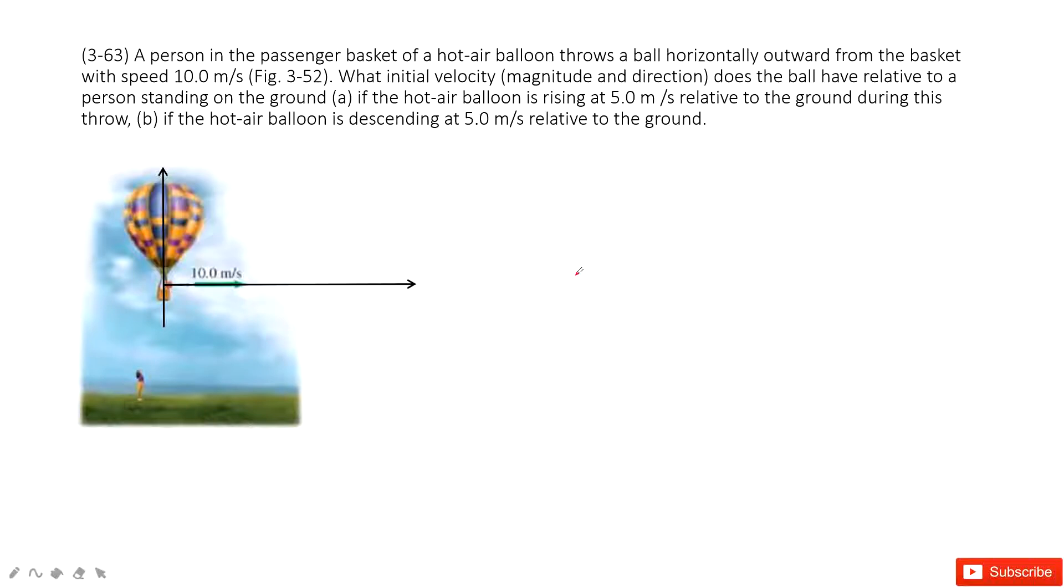In this one, we can look at these relative velocities. It tells us there is an object which has a velocity at horizontal of 10 meters per second. I ask you to find the initial velocity relative to the ground.